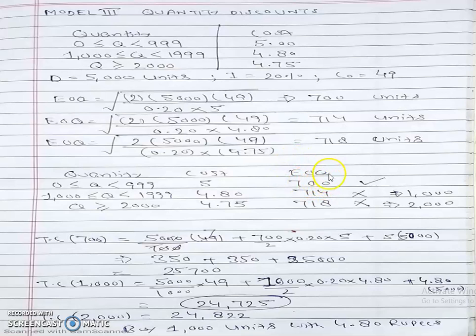Total annual inventory cost for 700 units is: D/Q times C₀, where D is 5,000, Q is 700, C₀ is 49, plus Q/2 times Cᴄ, where Cᴄ is I times C, plus C times D.